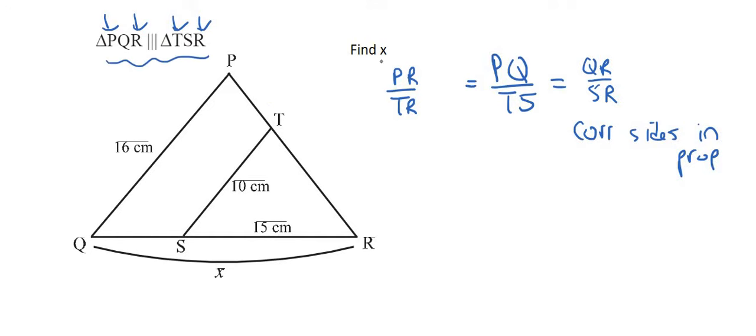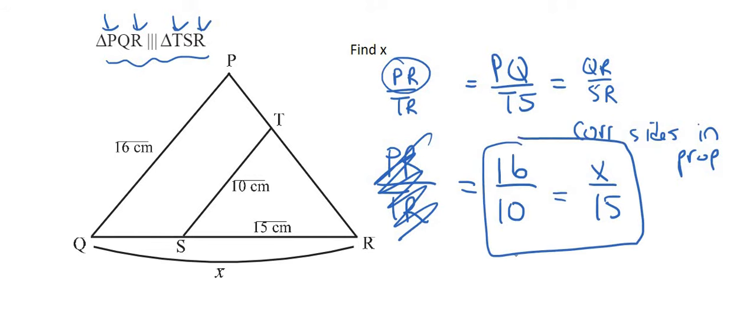Now what you do is you just go full information in. So PR we don't know what that is so we just leave it. TR we don't know what that is so we just leave it out. PQ is 16, TS is 10, QR is X and SR is 15. There we go, so now we don't have to even use this one, so we just use these two over here, and so 16 over 10 if you type that in on the calculator it will be 8 over 5. And so now we can see that the ratio to go from there to there you would times by 3, and so to go from there to there you also times by 3, and so X would be 24.